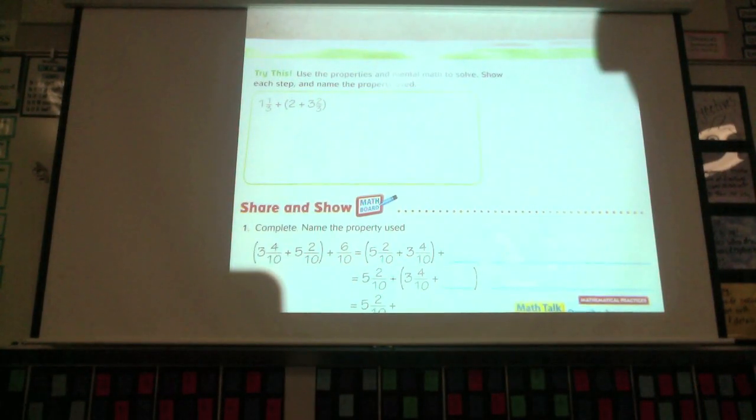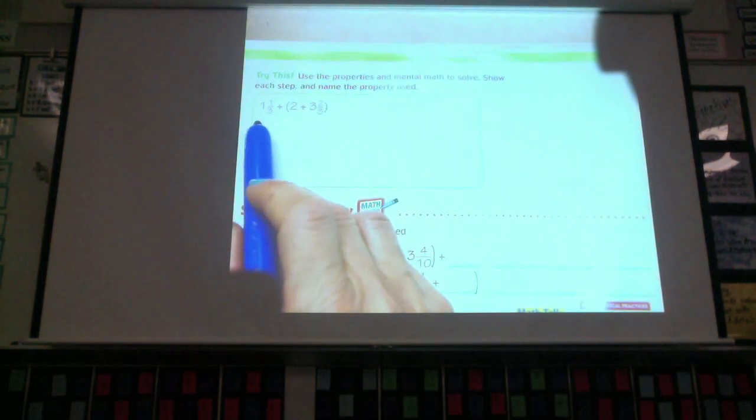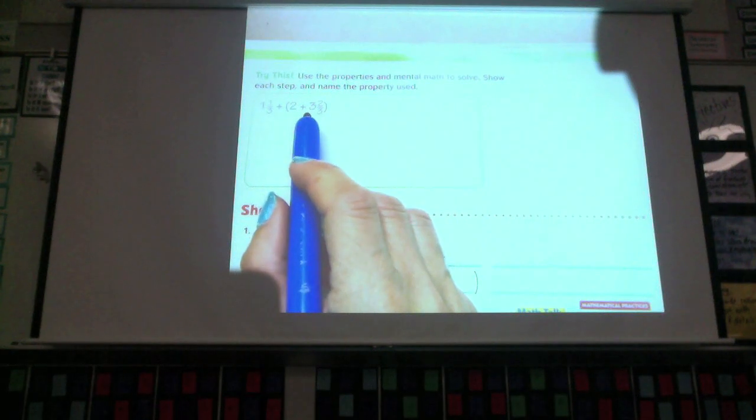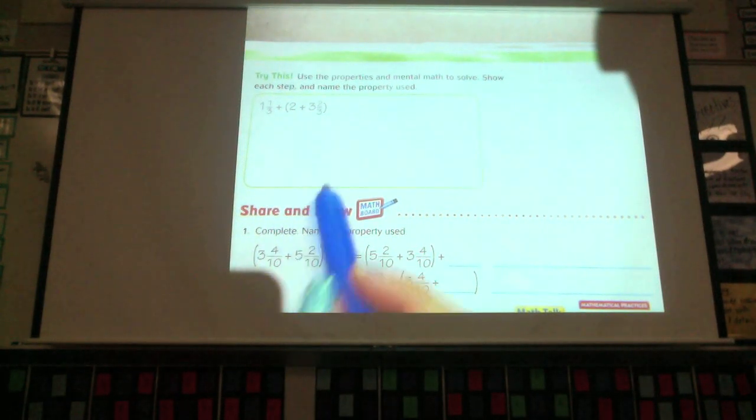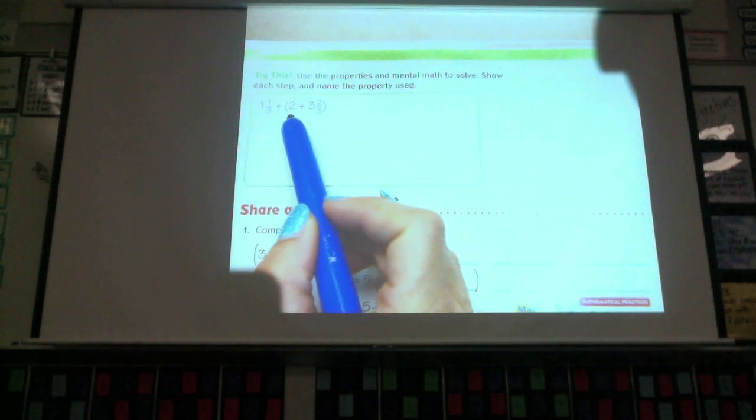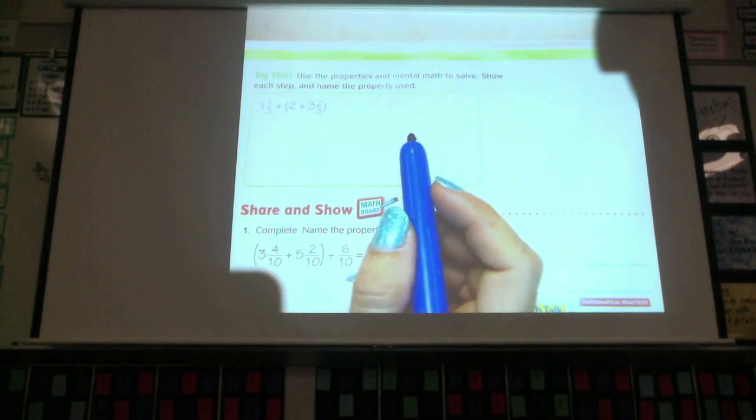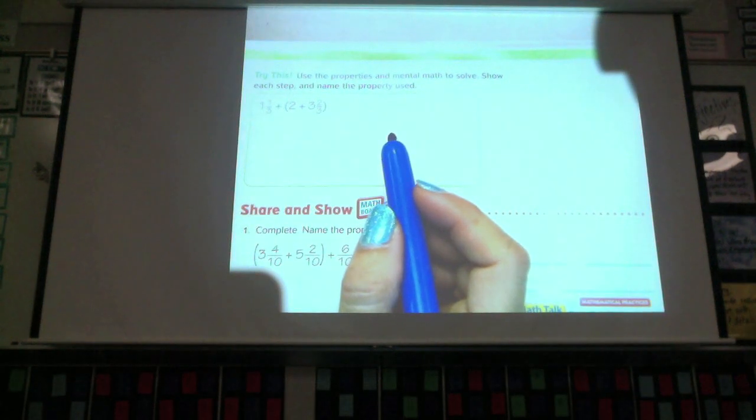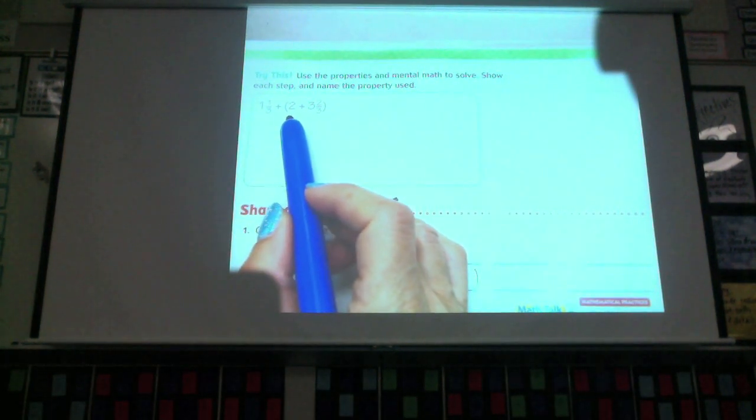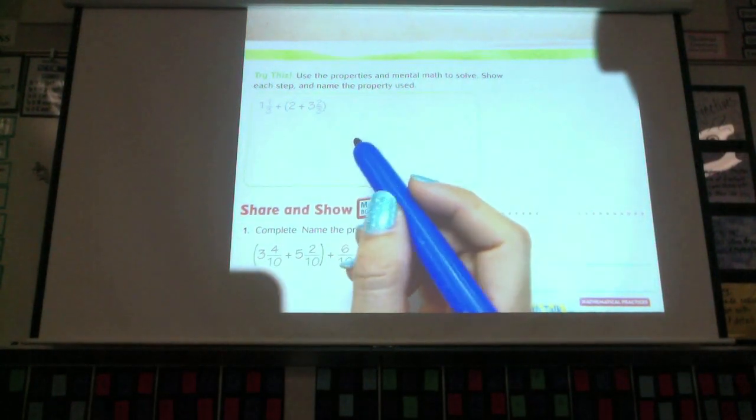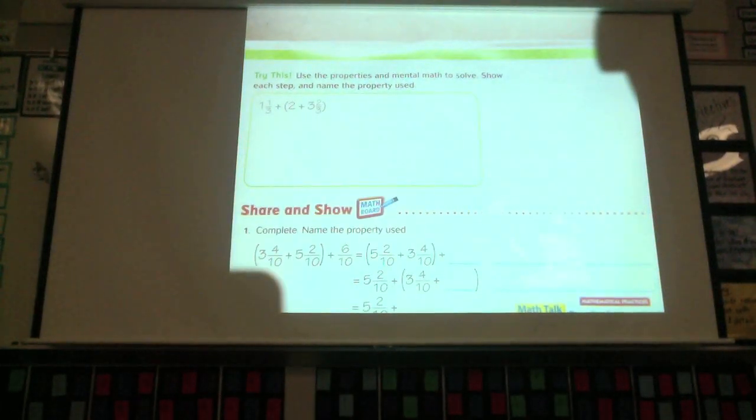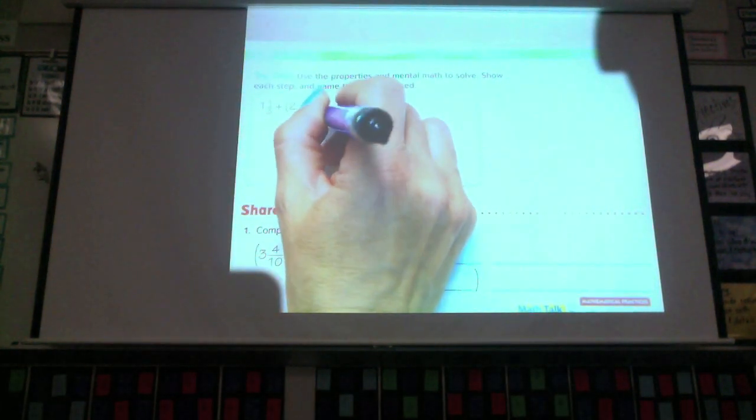Use the properties and mental math to solve. Show each step and name the property used. So, I have 1 third, a 2, and 3 and 2 thirds. There's two ways you could choose to do this. I'm looking at it the way it is, and I like 2 wholes plus 3 wholes and 2 thirds. I don't want to change anything because it looks easy to me. If I have 2 whole pizzas, and then I'm going to get 3 whole pizzas and 2 thirds more, now I have how many whole pizzas? What's 2 plus 3? 5. 5. So, this is now 5 and 2 thirds.